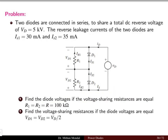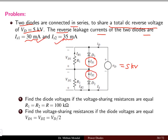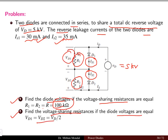Let us solve a problem to understand this scenario. Two diodes connected in series must share a total DC reverse voltage of 5 kV. The reverse leakage currents of the two diodes are given as IS1 = 30 mA and IS2 = 35 mA. First, find the diode voltages if the voltage sharing resistances are equal at R = 100 kΩ. Second, find the voltage sharing resistance if VD1 = VD2 = VS/2.